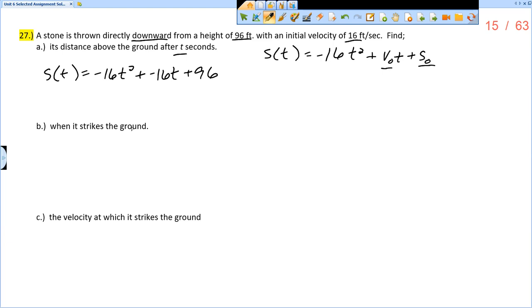Now, part b says find when it strikes the ground. So what does striking the ground mean? That means that the position would be 0, right? The height would be 0.